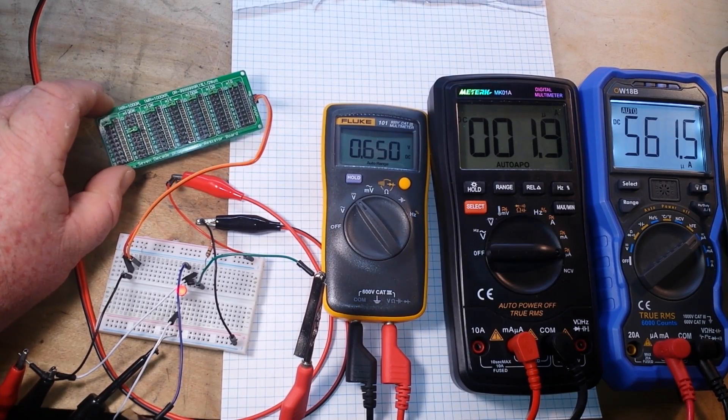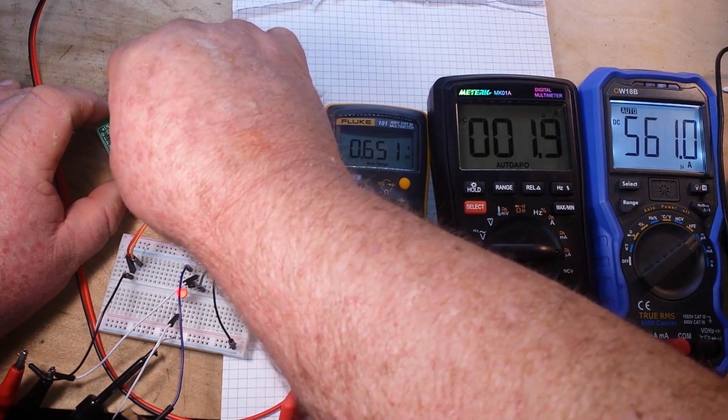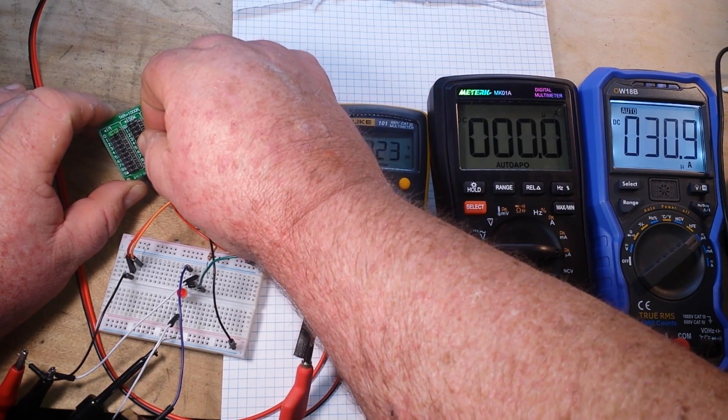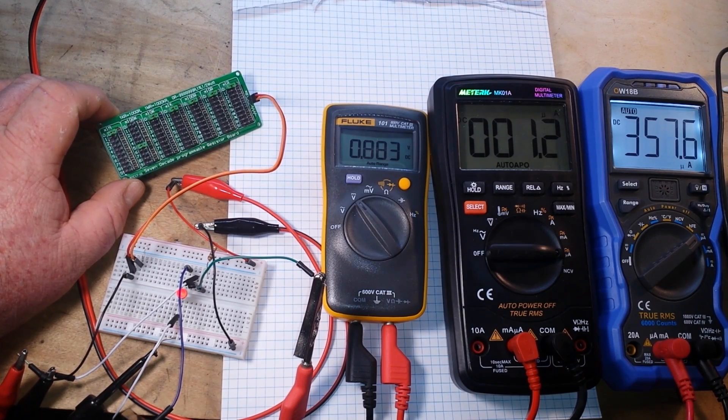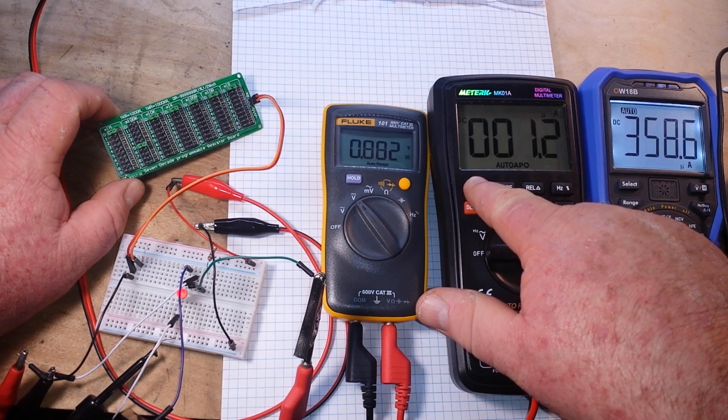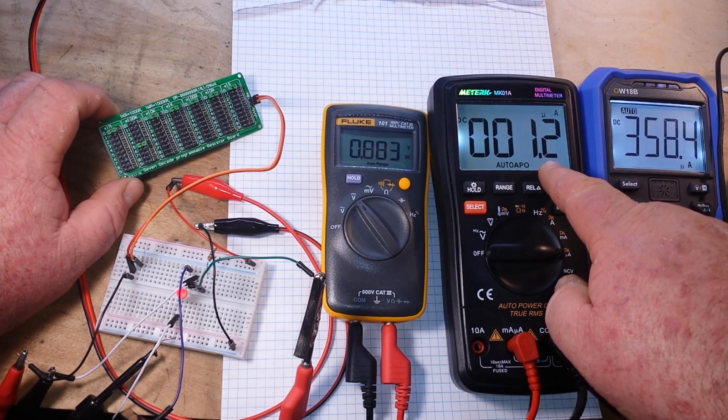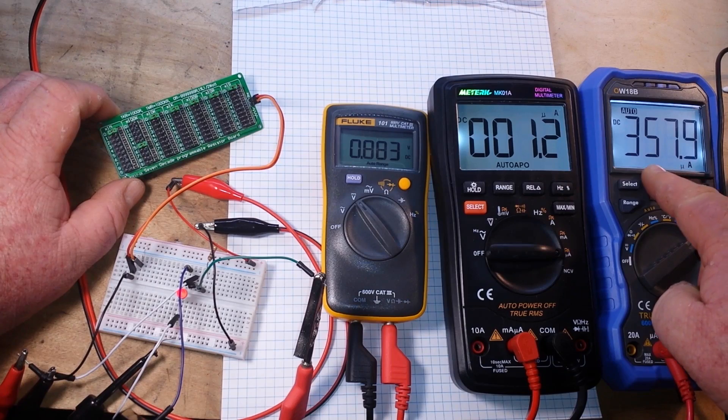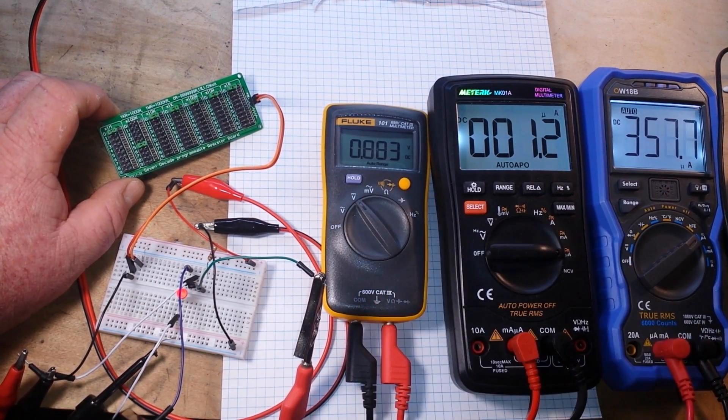There we are at 300,000 ohms. Let's go to 500,000 ohms. You can now see this light really goes off fast. 1.2 microamps of base current, 357 microamps of collector current, and a collector-emitter voltage of 0.883 volts.